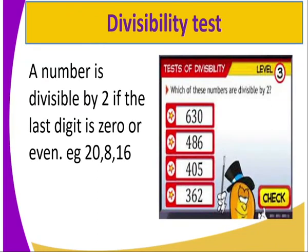We can have a divisibility test whereby you can say a number is divisible by 2 if the last digit is 0 or an even number. For example, you can have the number 20. If you are being asked, is the number divisible by 2? The answer is yes because the last digit is 0. For example, what about 8? Is 8 divisible by 2? The answer is yes because it is an even number, same as 16.